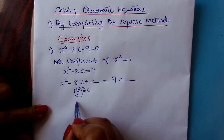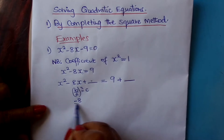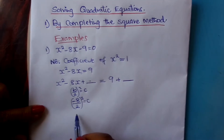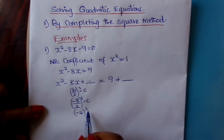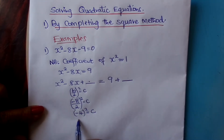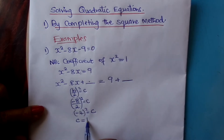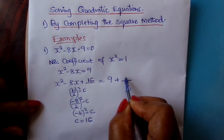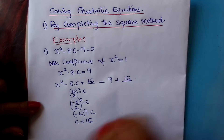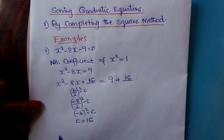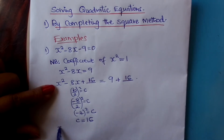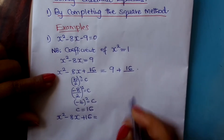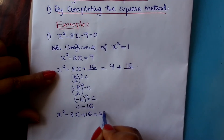Our b here is minus 8, divide by 2, squared, equals c. This is minus 4 squared, which equals c. Therefore our c is 16. Here we come and write 16, and on this other side we also write 16. From there, you come and write that x squared minus 8x plus 16 is equals to what? 9 plus 16 is 25.